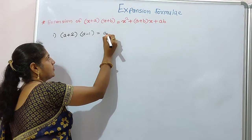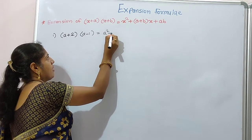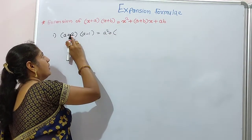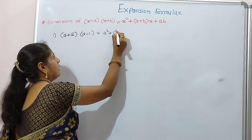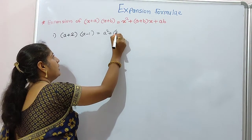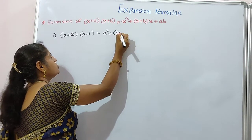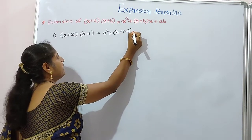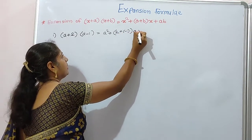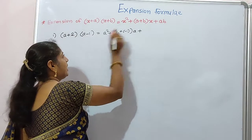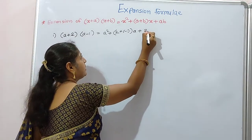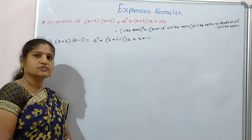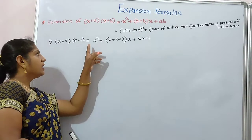By using the formula: a square, plus the summation of unlike terms — that is 2 plus minus 1 — multiplied by the like term a, plus the multiplication of unlike terms, that is 2 into minus 1.